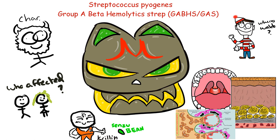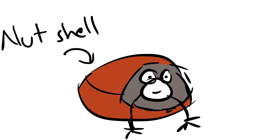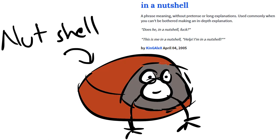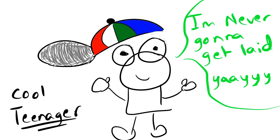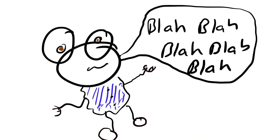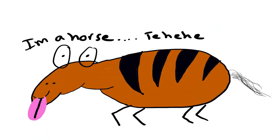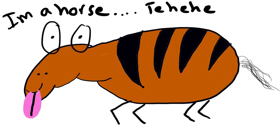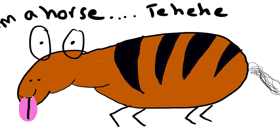So that's Streptococcus pyogenes, aka group A beta-hemolytic strep, in a nutshell. Now you know why it's known as the flesh-eating bacteria and why you shouldn't just walk away from a sore throat. Thanks for watching and make sure to click that like and subscribe button.